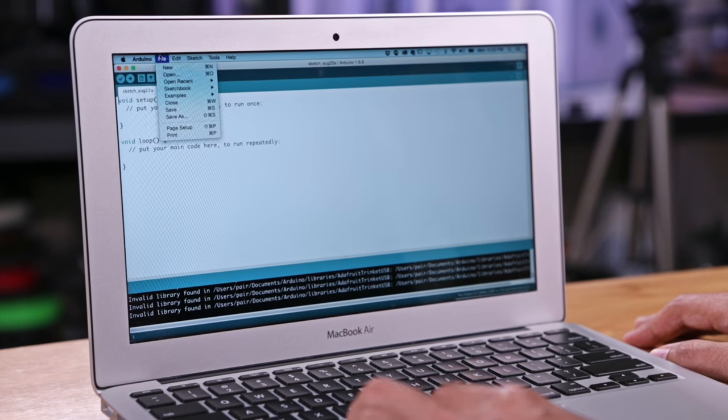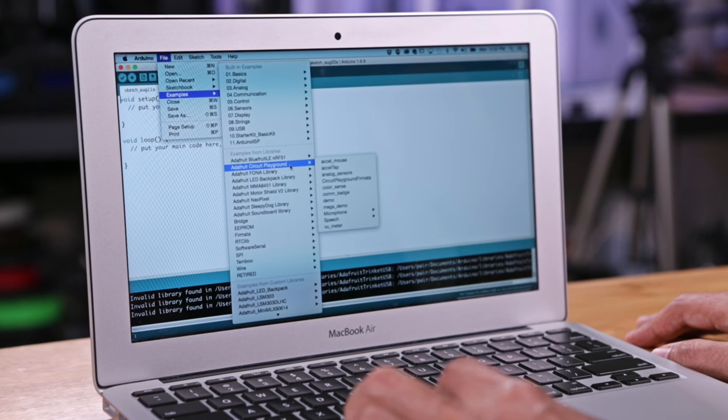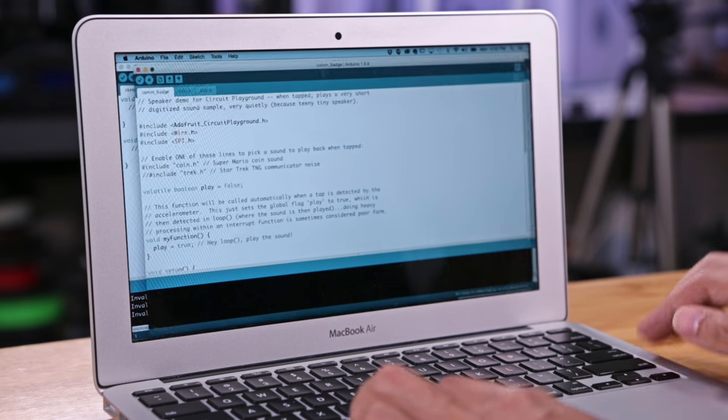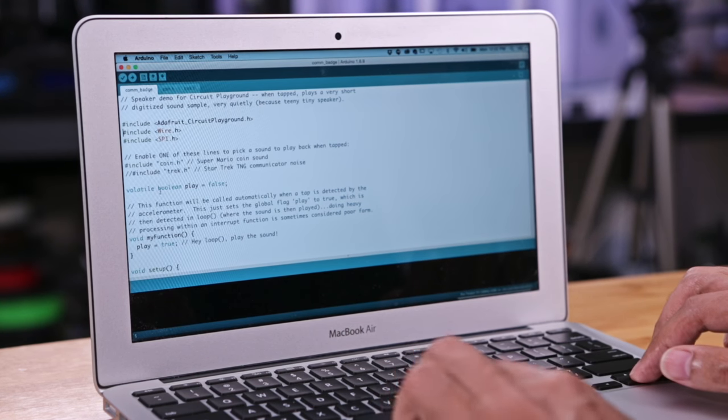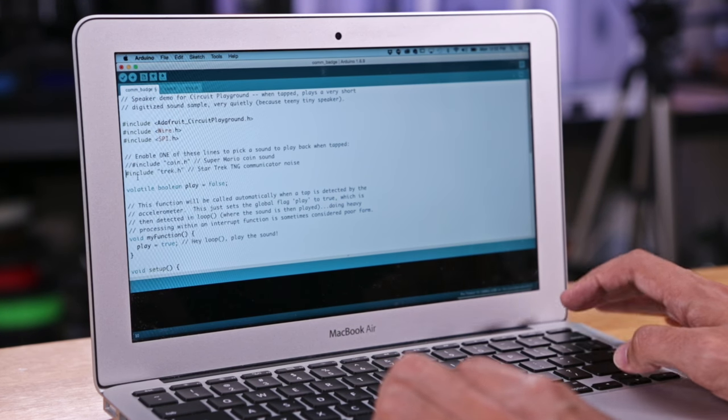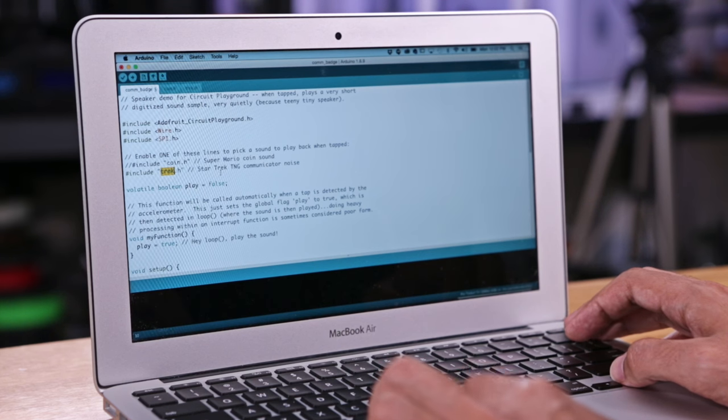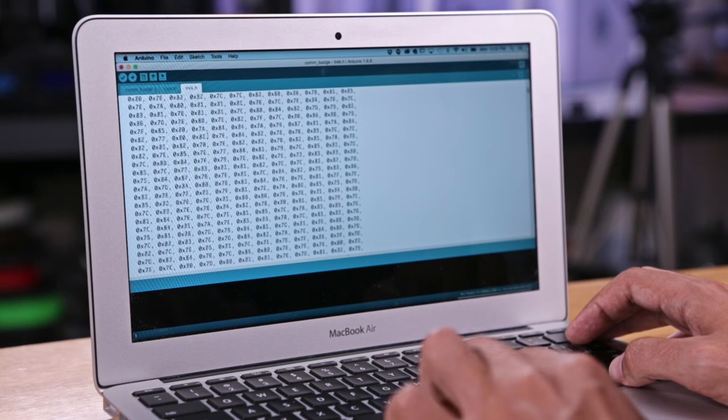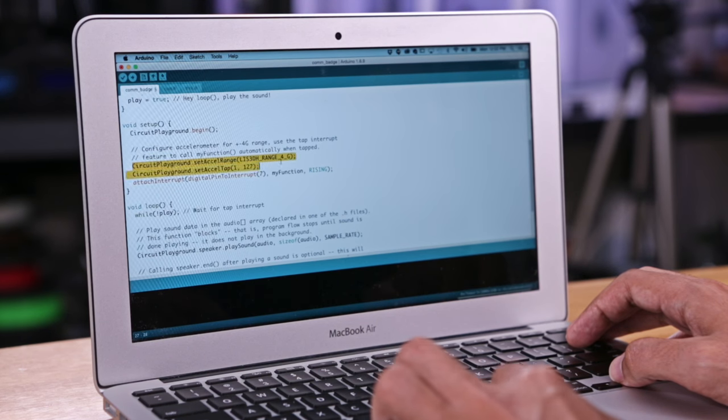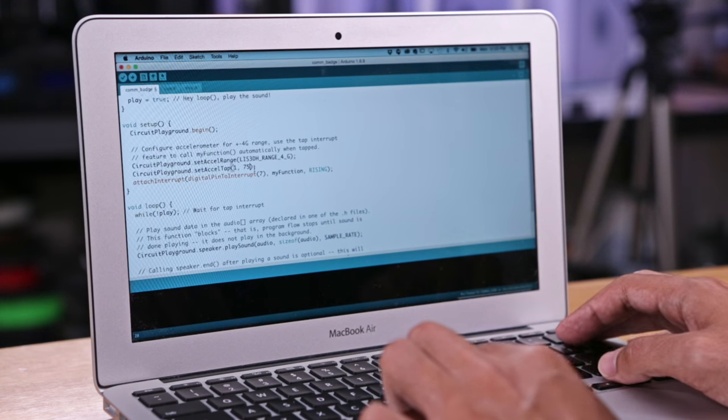Next I'll grab the code for the circuit playground board. The sketch can be found in the examples drop down, which comes with the circuit playground Arduino library. I'll comment out the include for the Super Mario coin sound and use the Star Trek communicator noise instead. The sound effect is already converted into binary for us. In the setup, the accelerometer range is preconfigured and we can adjust the sensitivity by changing the value in the set excel tap line. That's pretty much all we need to change.